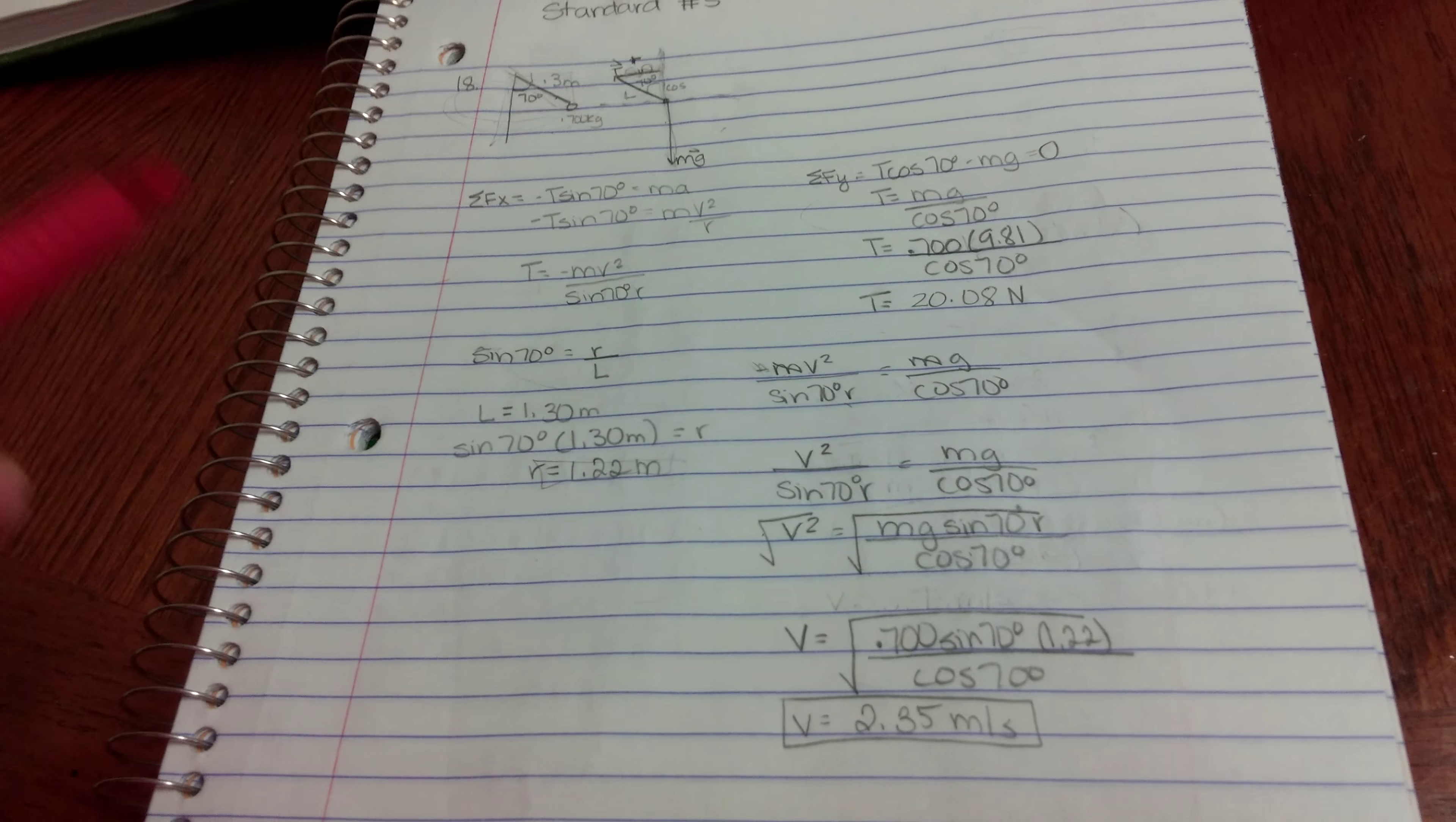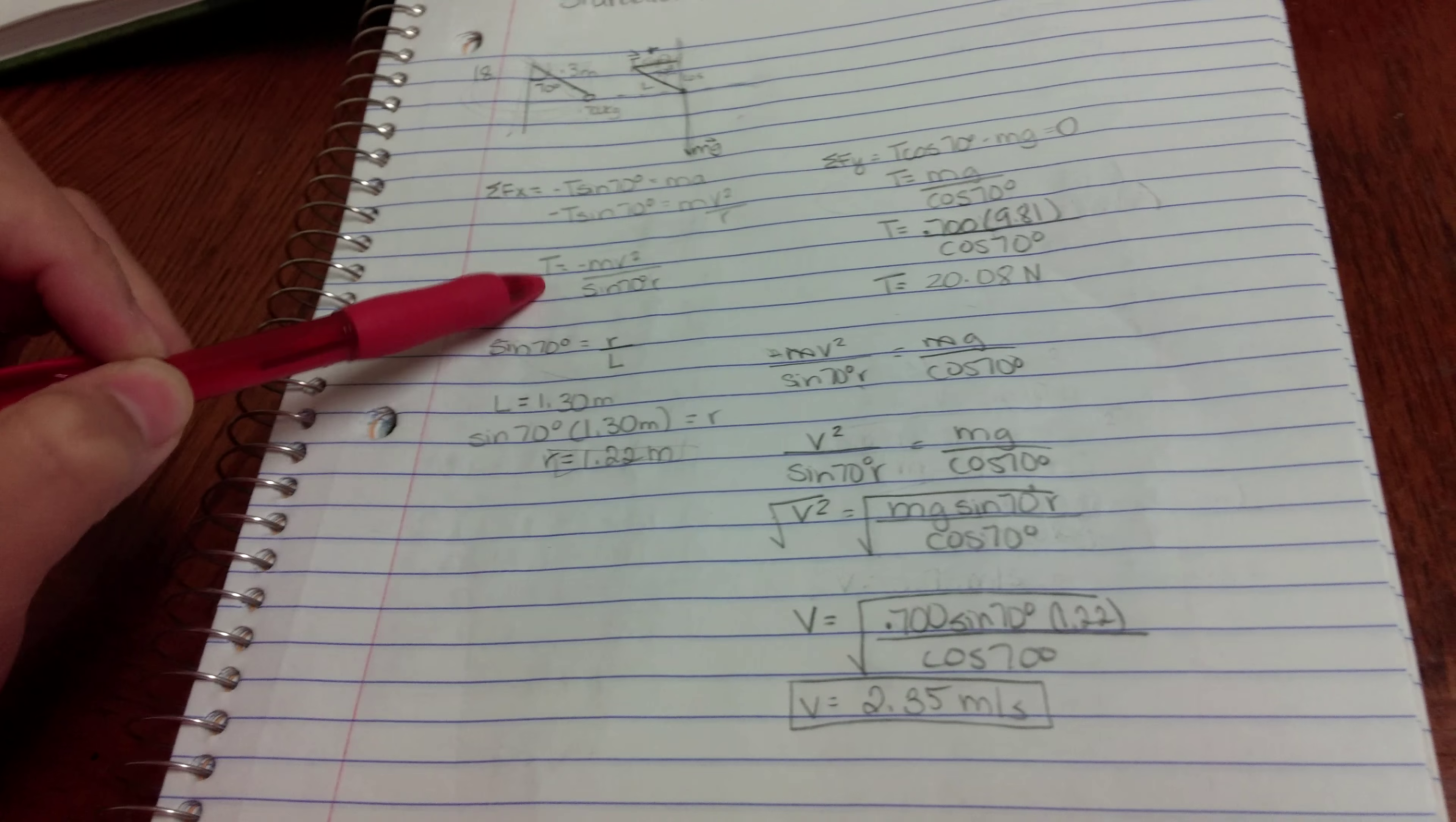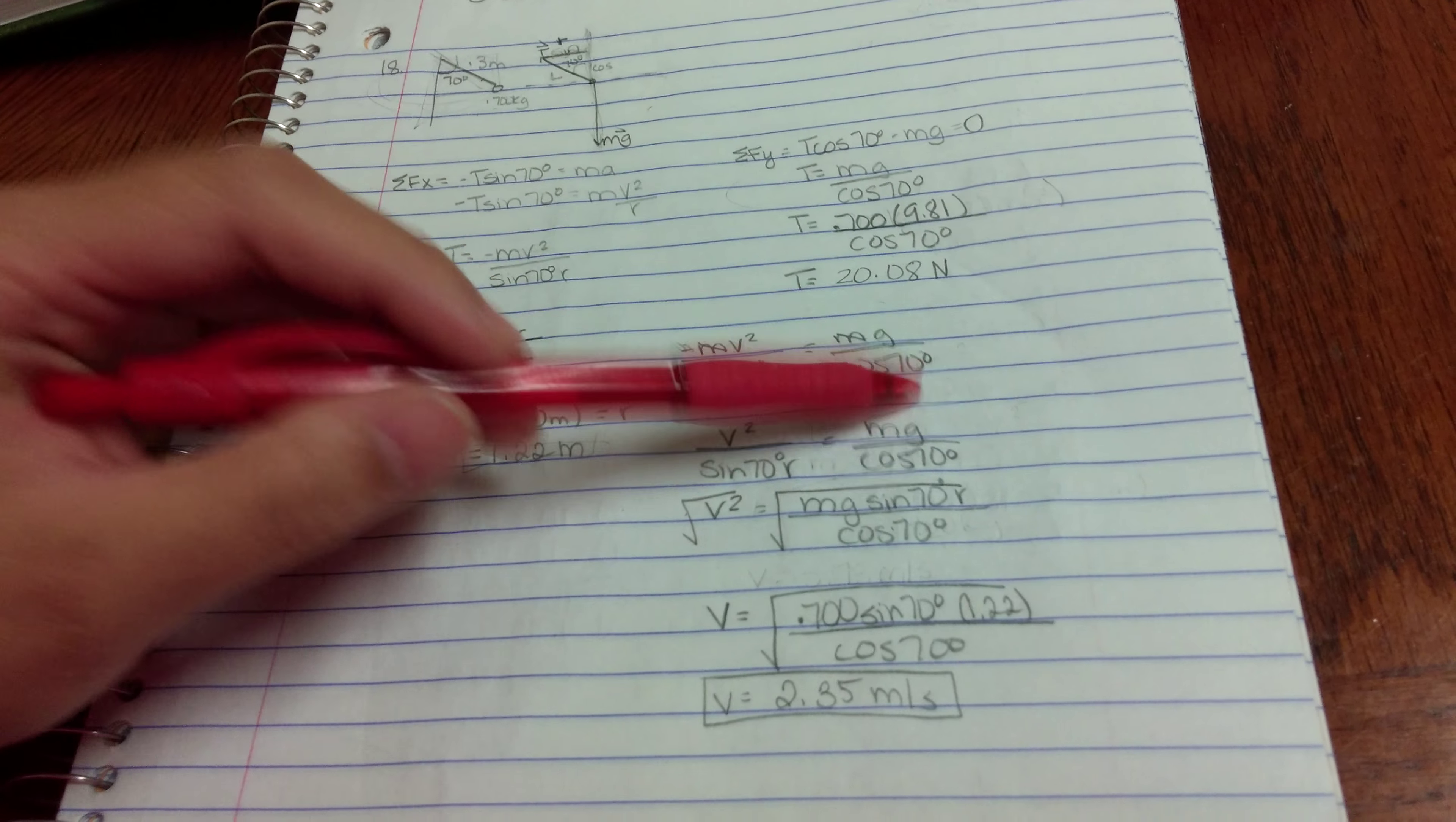And then now I want to solve for the tangential speed. Therefore, I have v squared over here. T equals, and then I just took this t equals and I plug it in for this t. Therefore, I came up with this equation: negative mv squared over sine of 70r equals mg over cosine of 70.